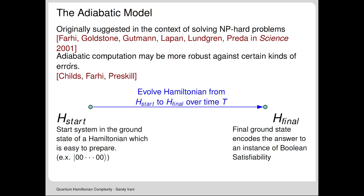In typical examples, you know the spectral gap of H_start and H_final—that's not hard. The tricky part is understanding the spectral gap as you evolve from one to the other. This is still a question of open research—how big that gap remains throughout the interpolation.